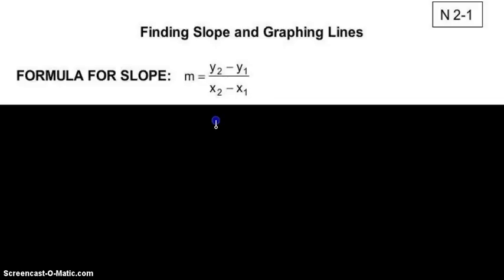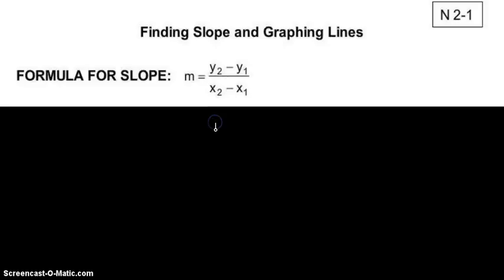Today we're going to be looking at finding slopes and graphing lines. This is your low-grade makeup assignment. If you look at the formula on the front page, it's the formula for slope. M is my slope, and the formula is M equals Y2 minus Y1 divided by X2 minus X1.